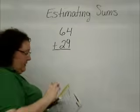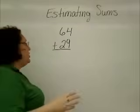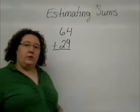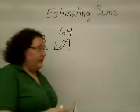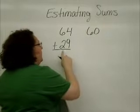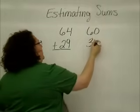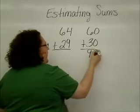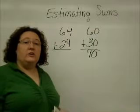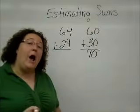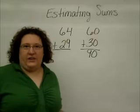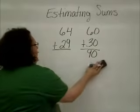For example, in problem number one on that page, we're going to take 64 and 29. We're going to round both numbers, and then we're going to add those rounded numbers together. When we round 64, we end up with 60, and when we round 29, we end up with 30. After adding the two together, we end up with an estimated sum of 90. We use this when we're looking for about how many, rather than knowing the exact number that we're actually adding together.